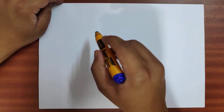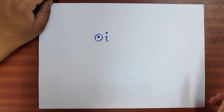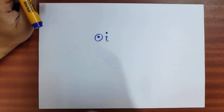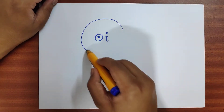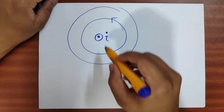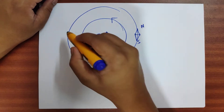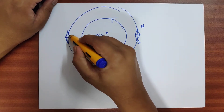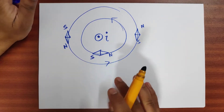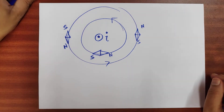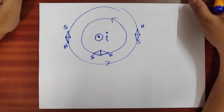So if I look at the wire from the top, the wire looks like this. The current is coming out of the plane of the paper. So here will be the magnetic field lines B. If I have a magnetic needle, it will point in different directions around the wire. These directions are all known from experimental data.